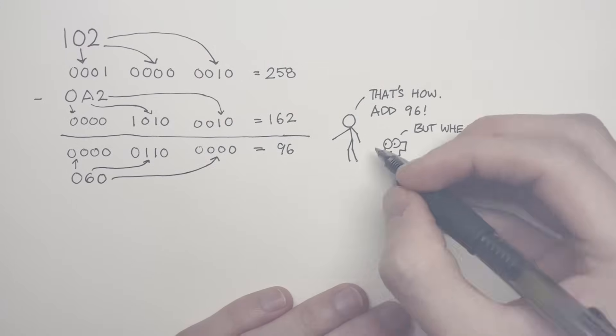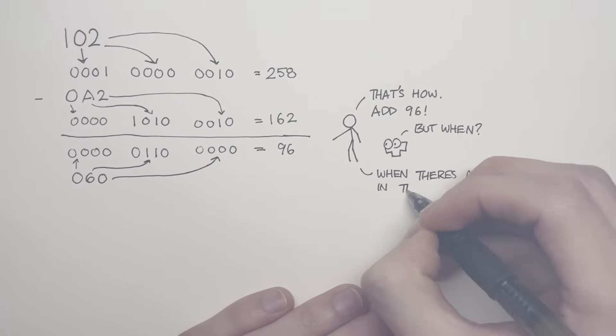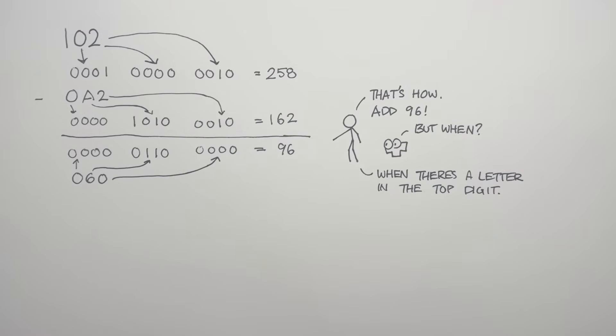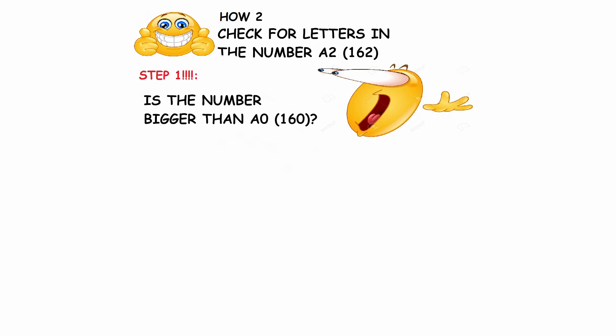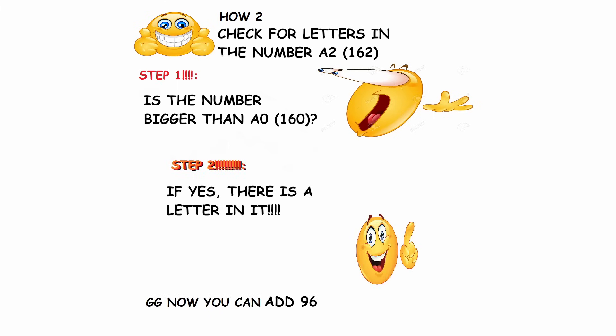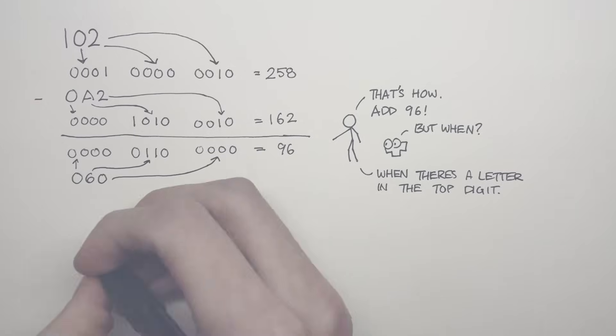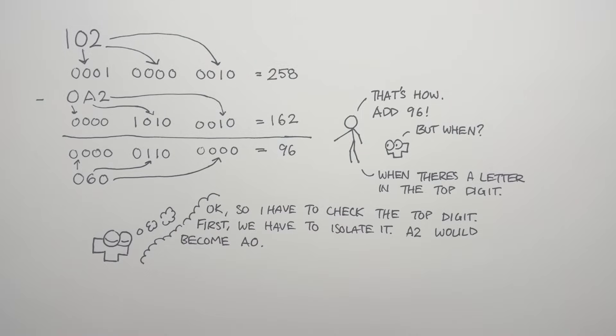So then all we have to do is add 96 when there's a letter in the top digit. Let me lay out how you would check for if there's a letter in the top digit. You would take the number, compare it to the number 160, which corresponds to a screen representation of A0. And if it's equal or greater than that, you would trigger the code to add 96.